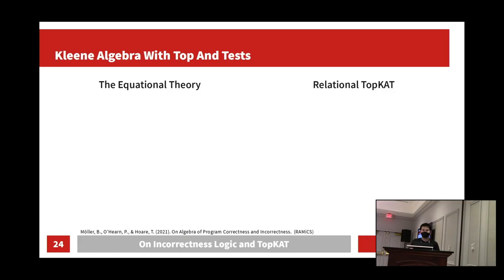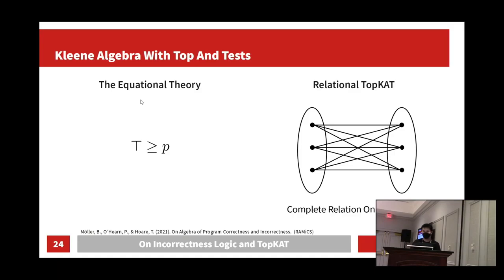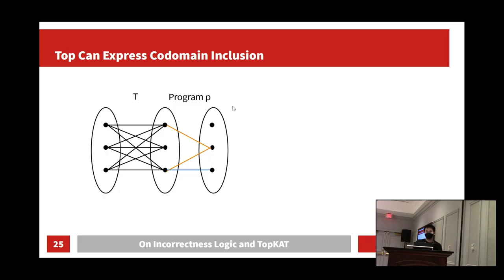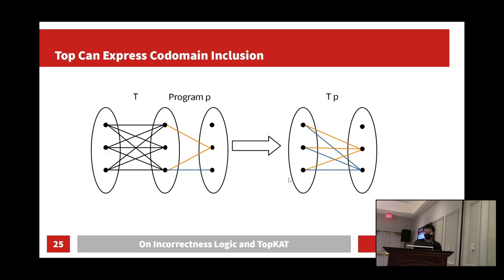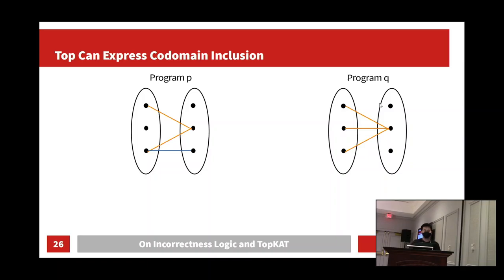In concurrent work, the authors directly added codomain into the axiomatic system of Kleene algebra with tests, but we chose a different route: we simply added one top element. Equationally, the top element is the largest element in the carrier set. Relationally, the top element is interpreted as the complete relation over all possible input and output memories. When we pre-compose the top element with a program P, we get every possible input related to the codomain of P, effectively normalizing the domain and traces so we can focus solely on comparing codomains.